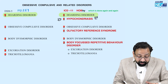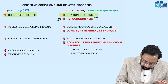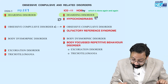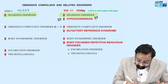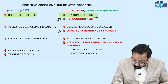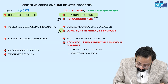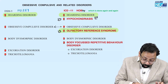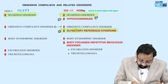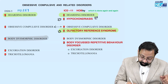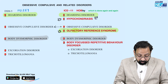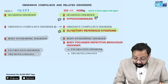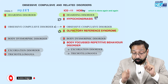OCD remains the same in ICD-11. One more new entity is olfactory reference syndrome — no questions have been asked on this yet, but it can be asked. Body dysmorphic disorder is the same in both DSM-5 and ICD-11. Excoriation and trichotillomania are also the same in both classifications.